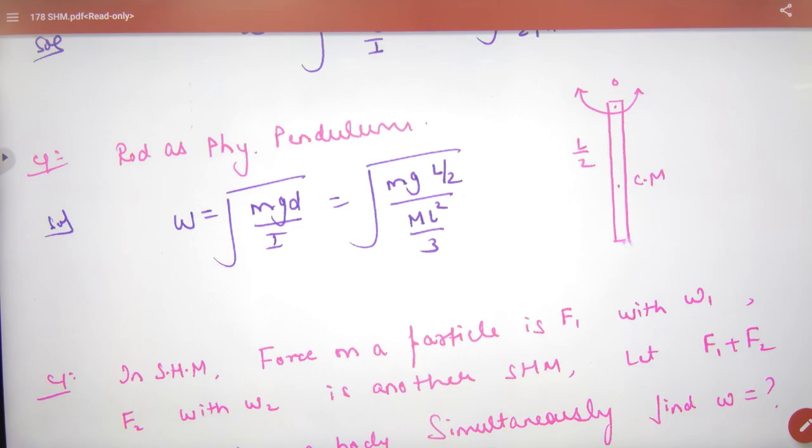The whole game is I. That's why people add this problem. Why? There are two concepts in it. Rotational motion of I and angular SHM of omega.